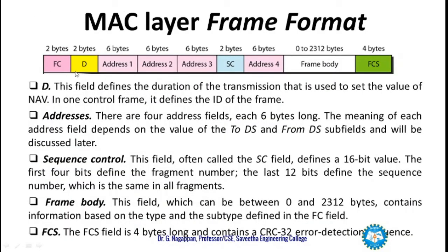Coming back to the remaining parts of the MAC layer frame format: the D field (Duration) defines the duration of the transmission and is used to set the value of NAV (Network Allocation Vector). In one control frame it defines the ID of the frame. This duration value allows other stations to set their NAV accordingly.